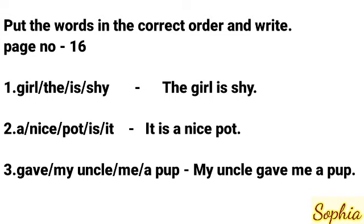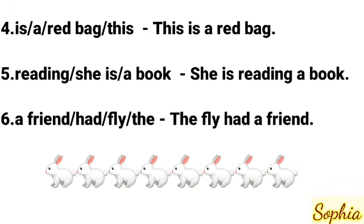Number three: correct order. Number four correct order: This is a red bag — first letter capital and end with a full stop. Number five correct order: She is reading a book — first letter capital and end with a full stop. Number six correct order: The fly had a friend — first letter capital and end with a full stop.